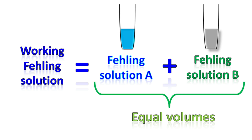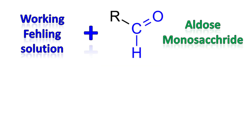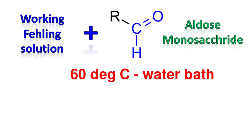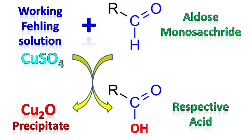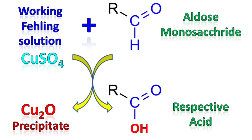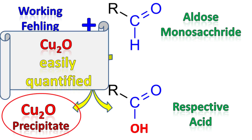The final working solution is prepared by mixing equal volumes of Fehling's A and Fehling's B. When monosaccharides are mixed with Fehling's solution and heated at 60 degrees Celsius in a water bath, the monosaccharide is oxidized to an acid while the Cu²⁺ ions are reduced to copper oxide.